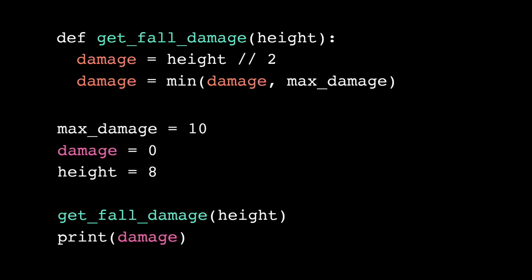What do you think happens when I run this program? Does it print 0, 4, or raise some kind of error? To find out, let's explore variable scope.